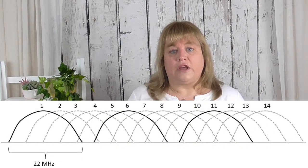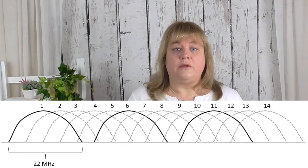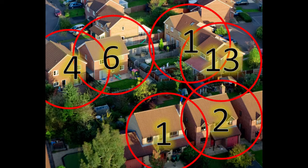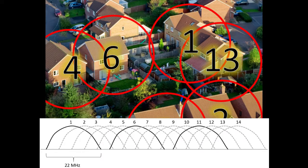In the 2.4 gigahertz frequency that we use in the UK, it is split into 14 channels. Some of these channels overlap. Here we have a plan showing some houses in close proximity to each other. Each house has a Wi-Fi network and they're each using a different channel. However, some of these channels are very close together, and as these Wi-Fi networks extend past the boundary of each property, some of them clash and overlap, sharing bandwidth, meaning their Wi-Fi network isn't as fast as it should be.